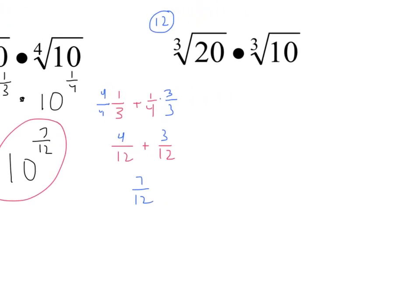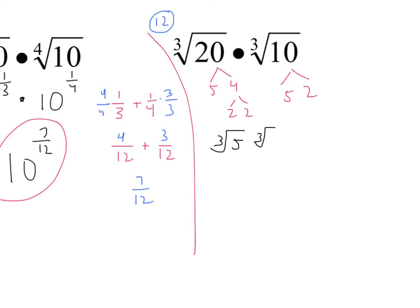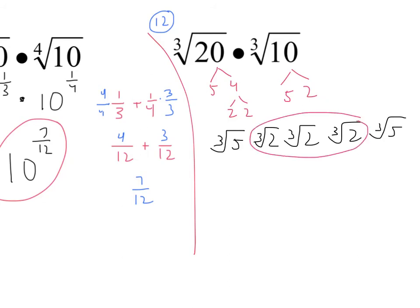For number twelve, I have the cube root of 20 times the cube root of 10. Because they're both cube roots, I can simplify by factoring. 20 is 5 times 4, which is 5 times 2 times 2, and 10 is 5 times 2. So I have the cube root of 5 times cube root of 2 times cube root of 2 times cube root of 2 times cube root of 5. Cube root of 2 times cube root of 2 times cube root of 2 is just 2, and cube root of 5 times cube root of 5 is the cube root of 25. The answer is 2 times the cube root of 25.